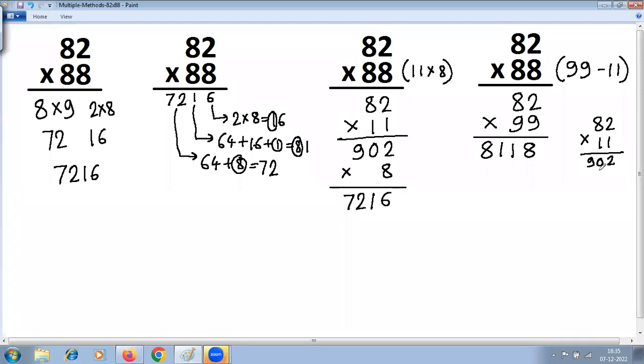This amount we have to subtract: 8118 minus 902. 8 minus 2 is 6, 1 minus 0 is 1. Here you cannot subtract 9 from 1, so you carry, it becomes 11. 11 minus 9 is 2. What remains is 7. 7216.